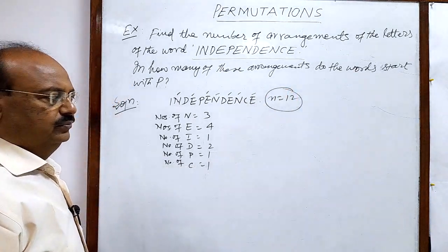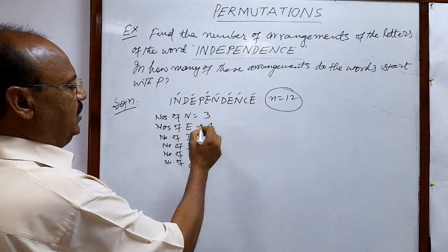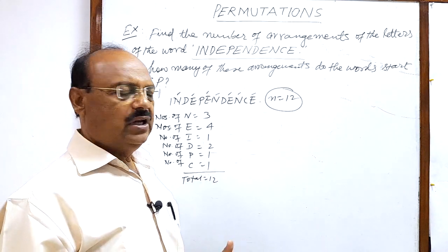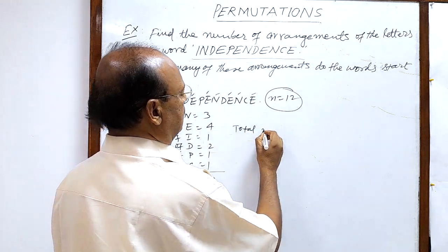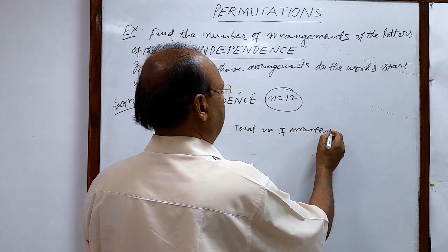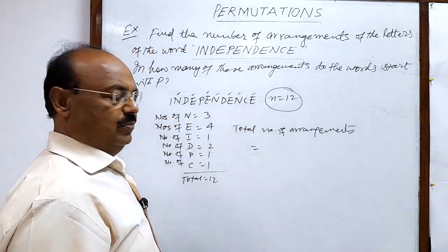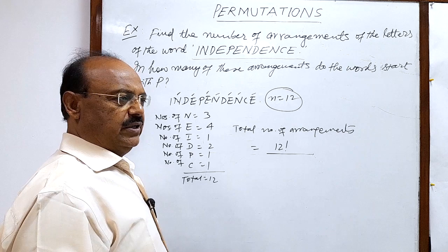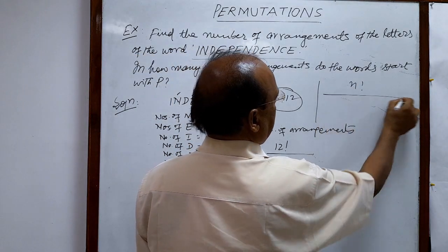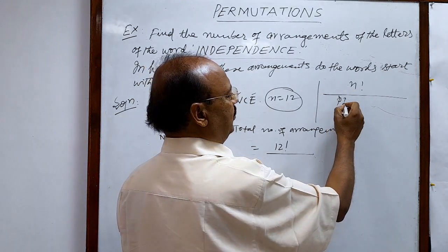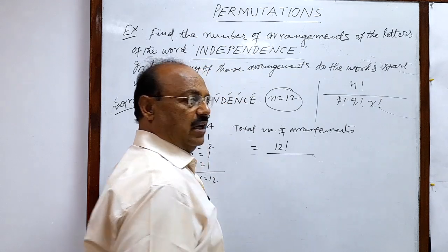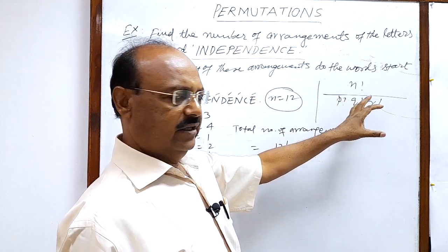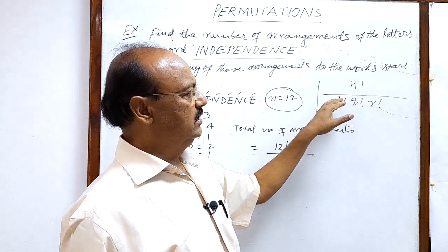Note down: N equals 12. The total number of arrangements we can make with this word INDEPENDENCE — just recall the formula. The formula is: total number of arrangements equals N factorial divided by P factorial, Q factorial, R factorial, when there are P like letters, Q like letters, R like letters.